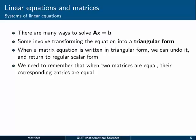There are many ways to solve this kind of matrix equation Ax equals b. Some of them involve transforming the equation into what's called a triangular form, where the coefficient matrix is non-zero only above the diagonal and on the diagonal — so it looks like a triangle of non-zeros. When the matrix is written in this triangular form, we can undo the matrix equation, turning it back into scalar form and easily solve for the variables. We need to remember that when two matrices are equal, the corresponding entries are equal — and that's the key to unlocking the matrix back into scalar form.